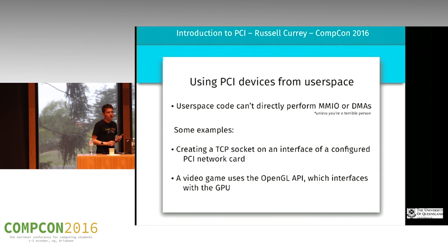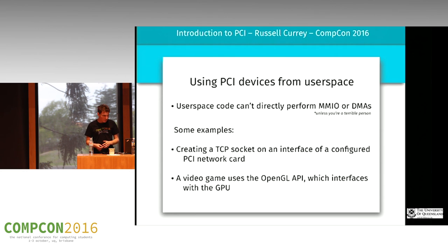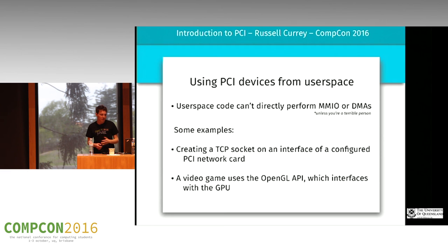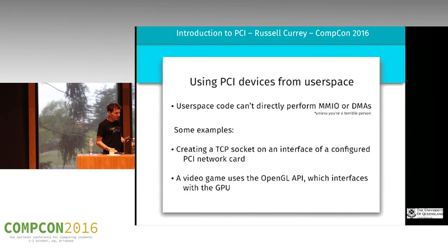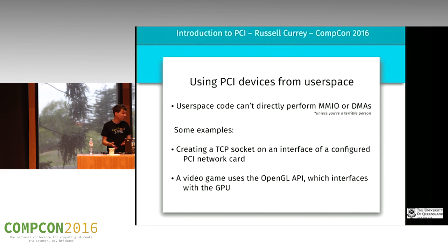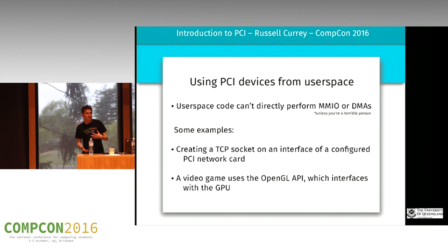How do you use these devices from user space? User space code can't directly perform an MMIO or a DMA — it has no mechanism to do that. Typically you're going to be going through some library or interface that the OS or driver has designed for you. For example, if you've got a network card configured to listen on a certain interface and you create a socket on that interface, you're now using that PCI device. All of the hardware, all the driver work, is abstracted away from you — it just works.